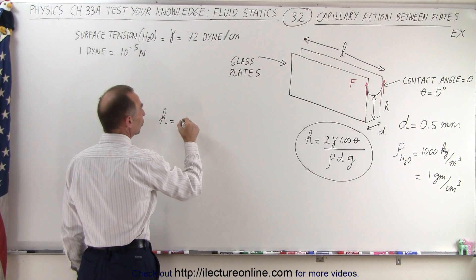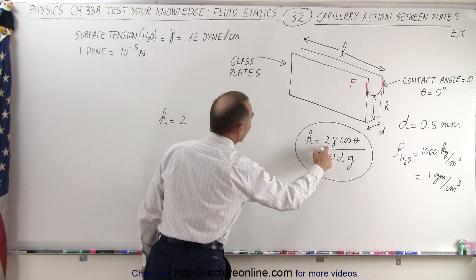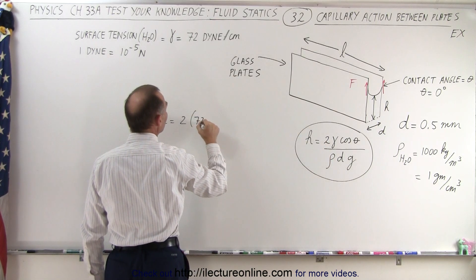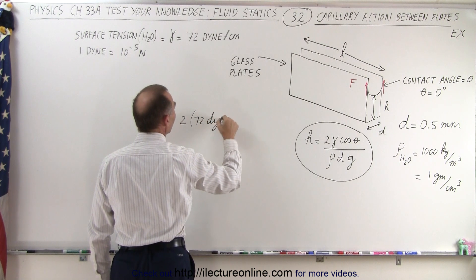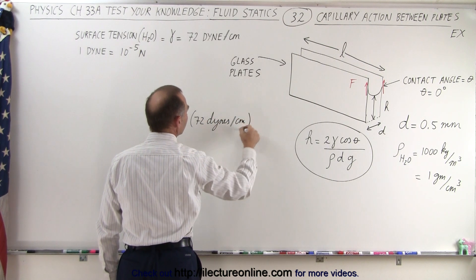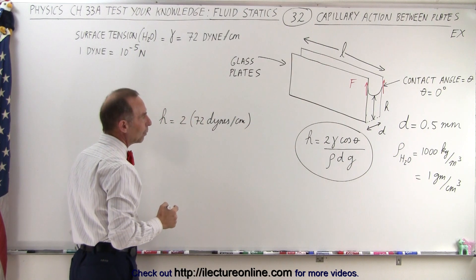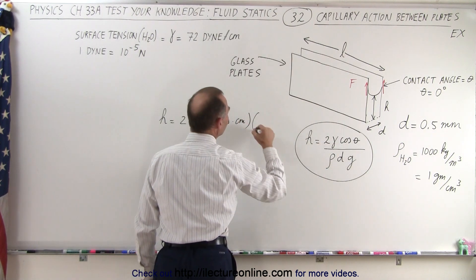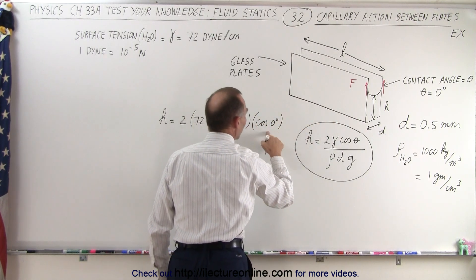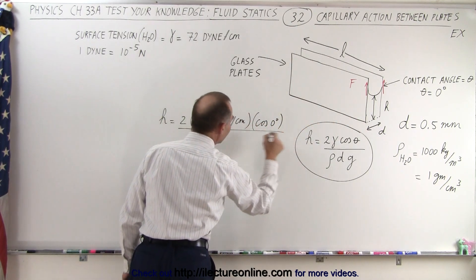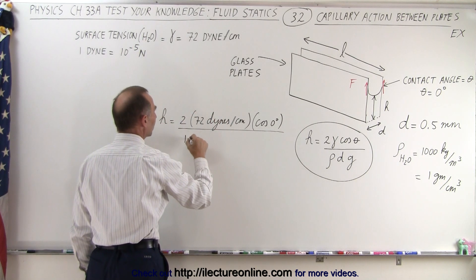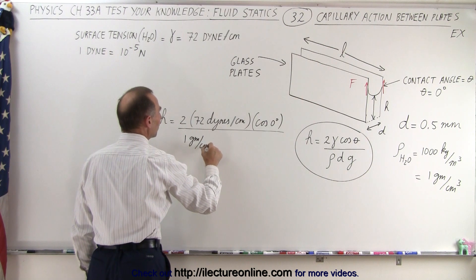So the height is equal to two times the surface tension for water which is 72 dynes per centimeter. And we multiply times the cosine of the wetting angle which in this case is going to be zero degrees, so the cosine of zero degrees which is one, divided by the density. So instead of writing a thousand kilograms per cubic meter we write one gram per cubic centimeter.